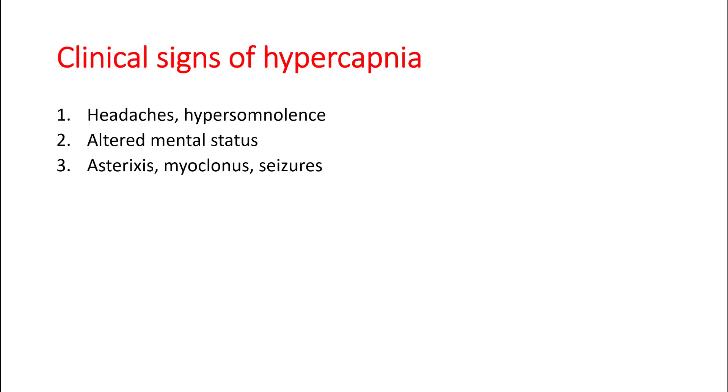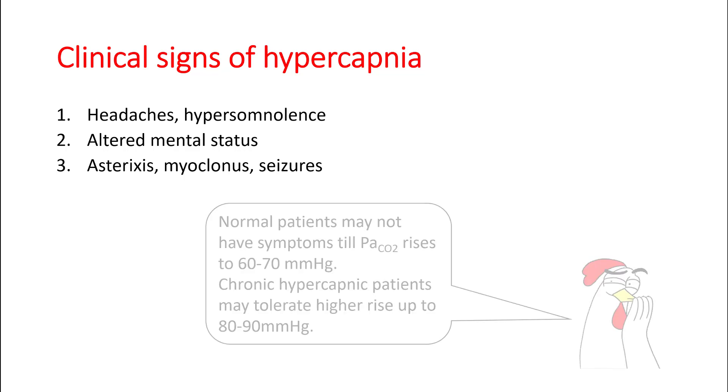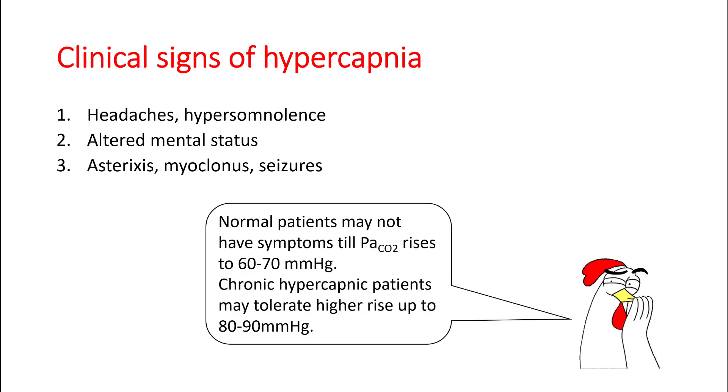Clinical signs of hypercapnia include headaches and hypersomnia. As your hypercapnia worsens, you can have altered mental status, asterixis, myoclonus, and even seizures. Normal patients may not have symptoms till the PaCO2 rises up to 60 to 70 mmHg, while chronic hypercapnic patients can tolerate even higher rise up to 80 to 90 mmHg.